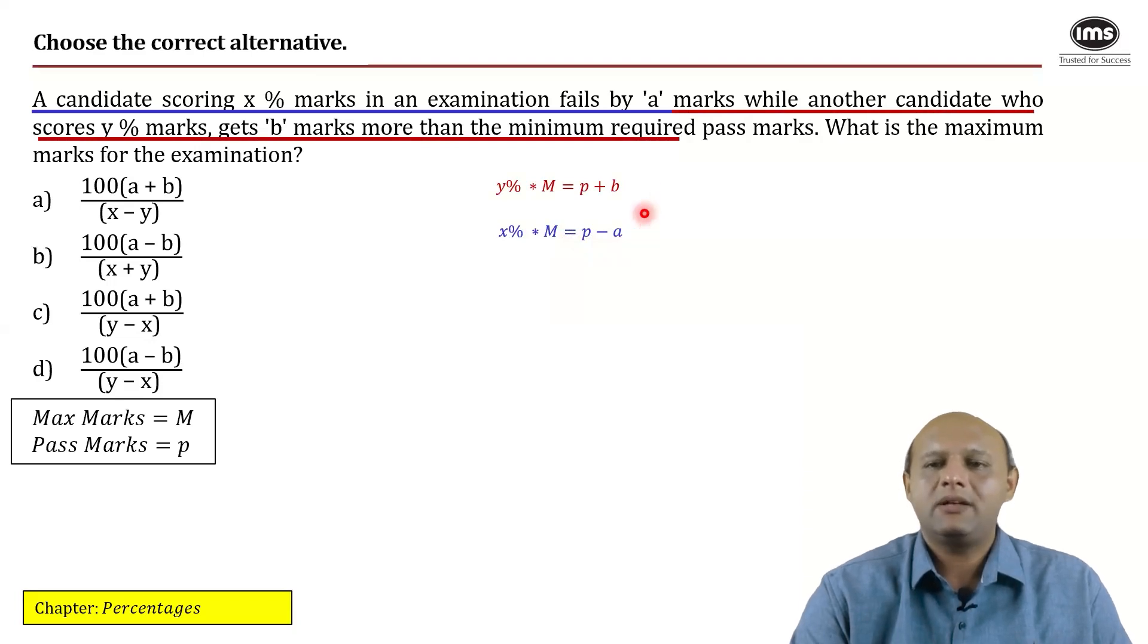What does it ask you to calculate? It asks you to calculate the maximum marks. So obviously what would you do? Because you have the coefficients equal, just subtract the second equation from the first one. In doing that you will realize that this minus sign becomes positive and both P's will get cancelled.